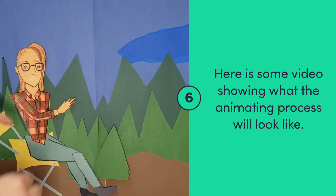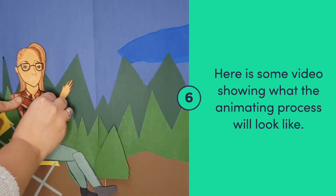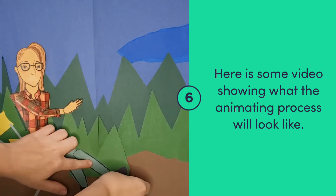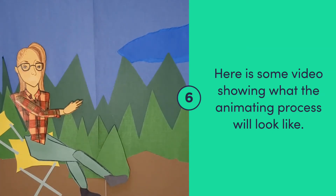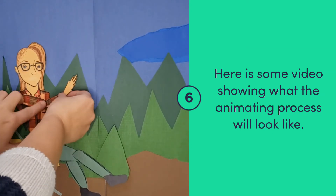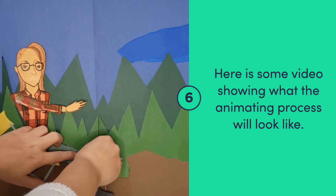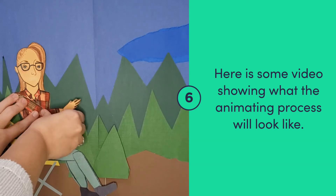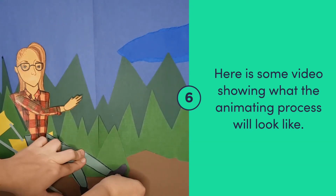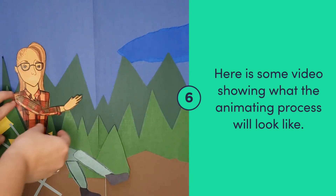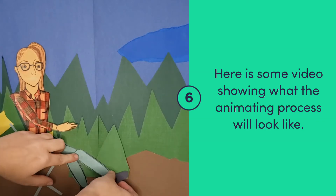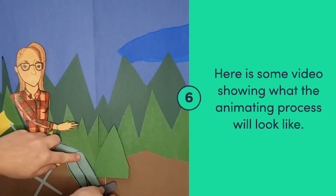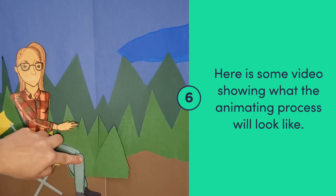Here is a video of me in the process of creating a stop-motion animation. As you can see, to create the illusion that the character is moving on its own, I move the character slightly each time I take a picture. When I press the red capture button, I am careful to make sure that my body is out of the frame. This makes the final animation look polished and professional.